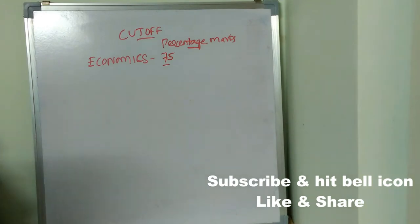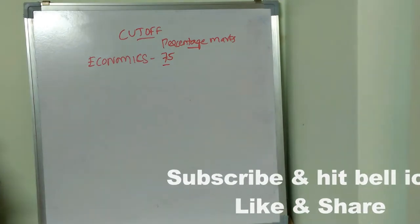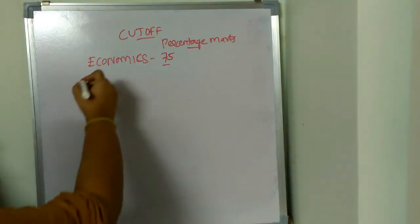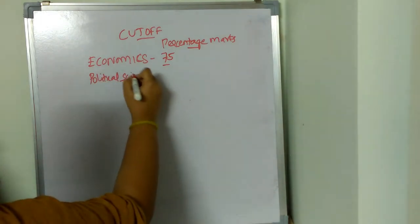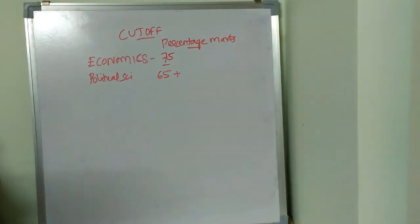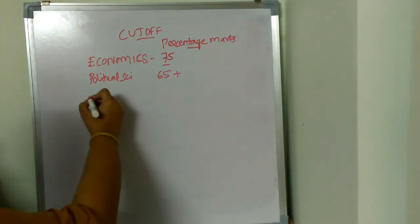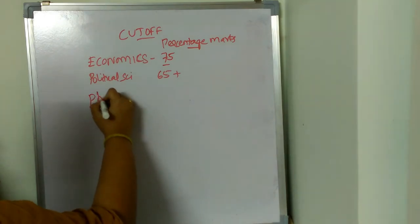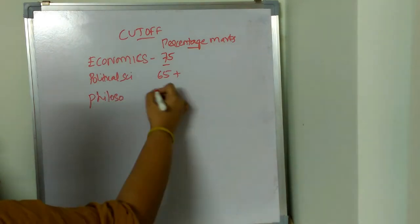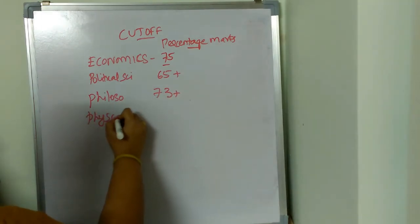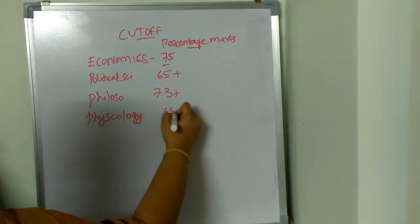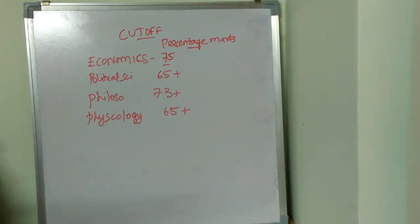Coming to political science, the cutoff is going to be 65 plus. Coming to philosophy, the cutoff is going to be 73 plus. And coming to psychology, the cutoff is 65 plus.